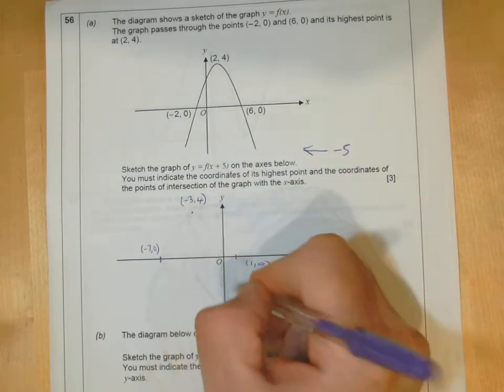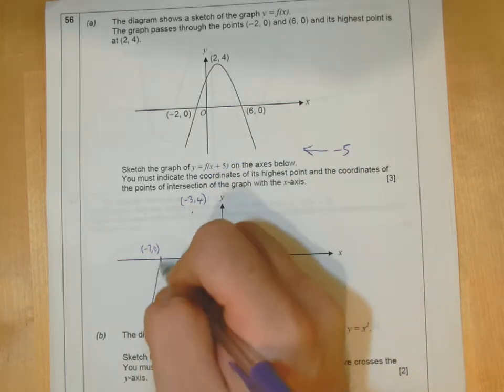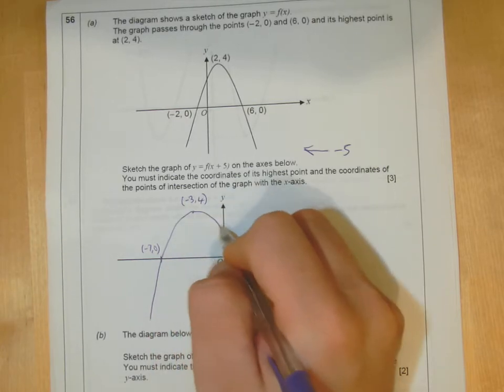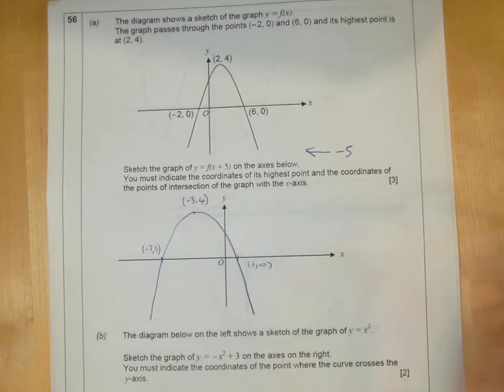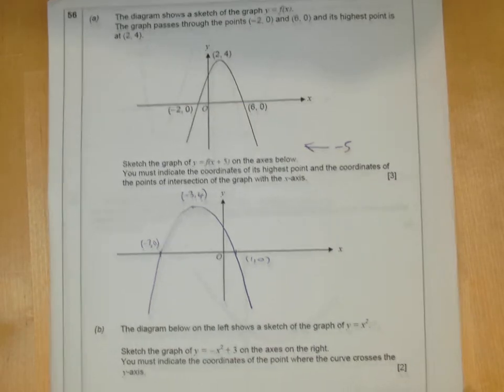It doesn't have to be perfect. In terms of the scale, as long as you've got the right coordinates there. And that's our f of x plus 5.